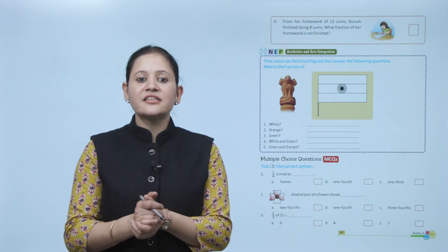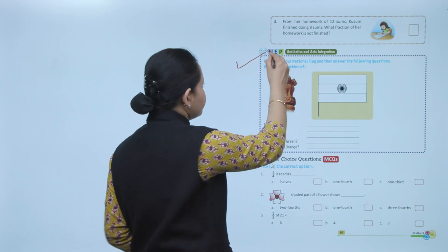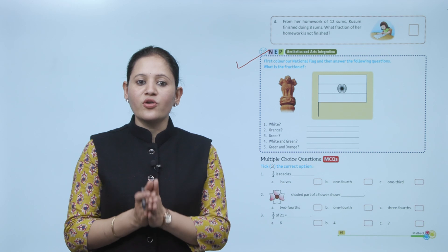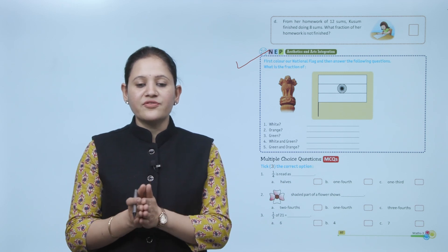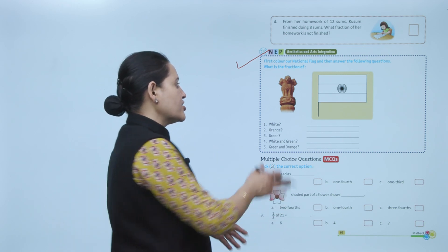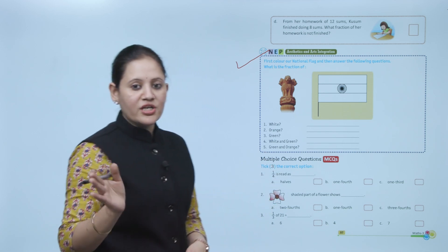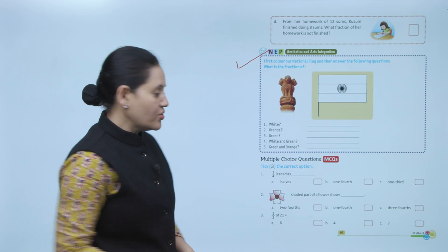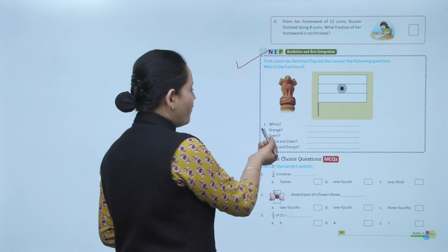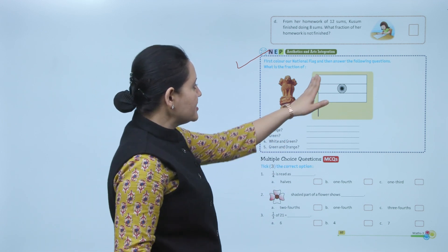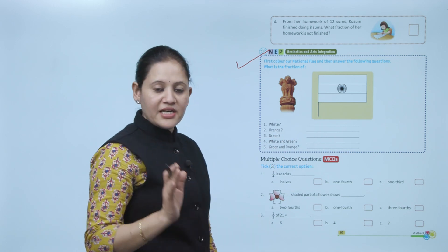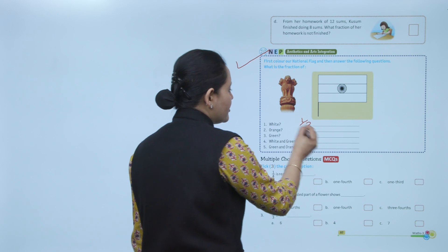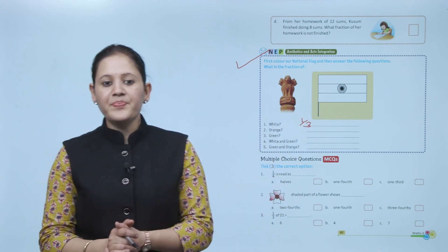Next: aesthetic and art integration. First, color the national flag and then answer the following questions. You know what colors are there — saffron, white, and green, and the Ashoka Chakra is blue. You have to show what fraction the white part represents, because the flag is divided into 3 equal parts, so each part represents 1 by 3.